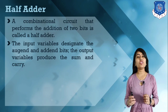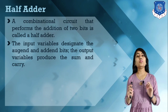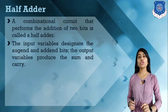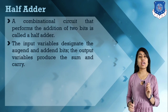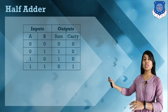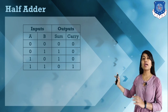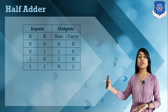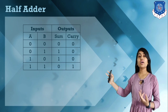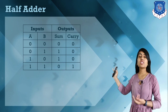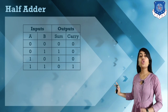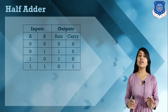In the half adder we have two inputs and two outputs. The two input bits are added and these input variables produce sum and carry as outputs. We can make a truth table for the half adder with inputs A and B and outputs sum and carry. For two input variables we have four possible combinations: 0+0 gives sum 0 carry 0; 0+1 gives sum 1 carry 0; 1+0 gives sum 1 carry 0; and 1+1 gives sum 0 carry 1.